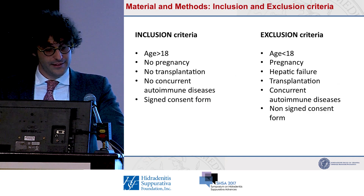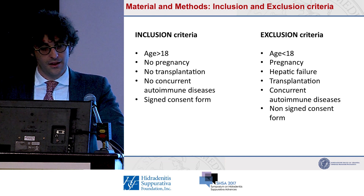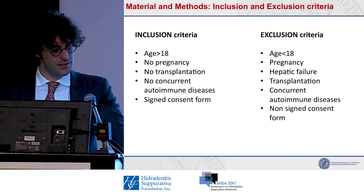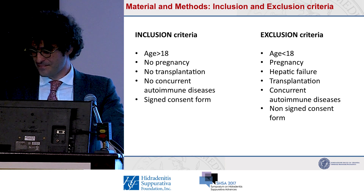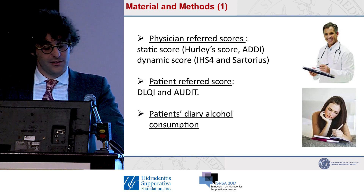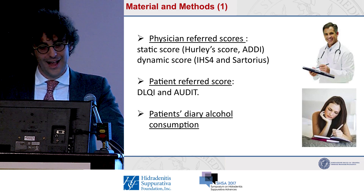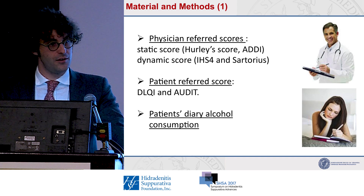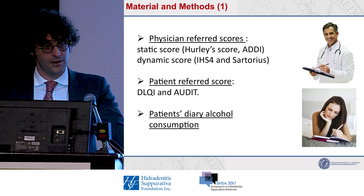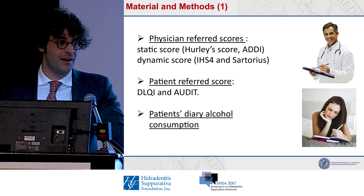Briefly covering the inclusion and exclusion criteria: patients must be over 18 years old, non-pregnant, without transplantation, without concurrent autoimmune diseases, and must provide signed consent. At T0 we assess patient history and perform static scoring using the Sartorius score and the ADDI — the Auto-inflammatory Disease Damage Index — which was recently proposed as a new tool to assess overall auto-inflammation impact across all tissues. Originally developed for monogenic auto-inflammatory diseases, it has been experimentally adapted to HS only recently.